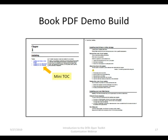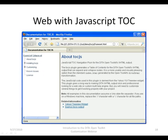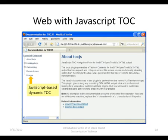This example shows a more advanced output for the web with CSS and JavaScript integration. It includes a dynamic table of contents where nodes can be expanded and collapsed.